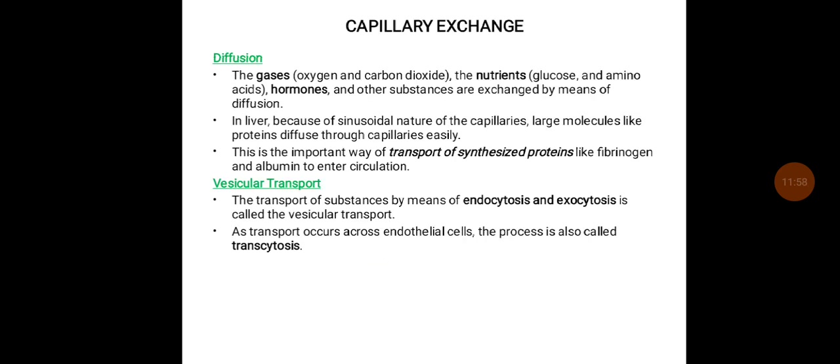Diffusion is the mechanism by which gases like oxygen and carbon dioxide, nutrients such as glucose and amino acids, hormones, and other substances are exchanged. In the liver, because of the sinusoidal nature of the capillaries, large molecules like proteins diffuse through capillaries easily. This is the important route by which synthesized proteins like fibrinogen and albumin enter into the circulation.